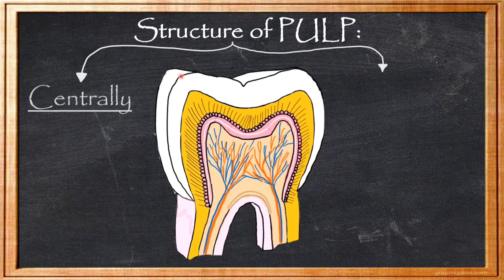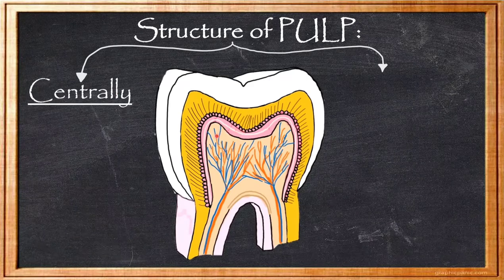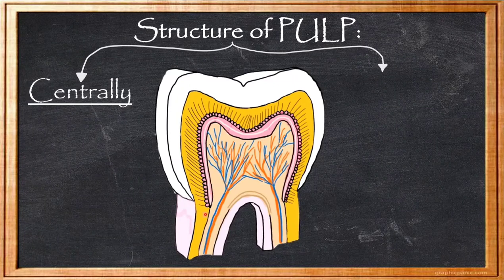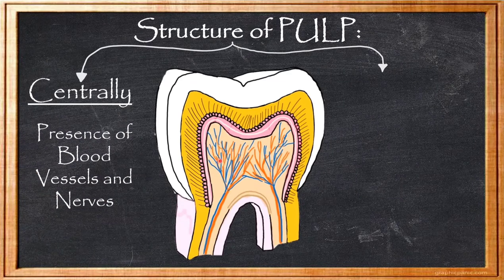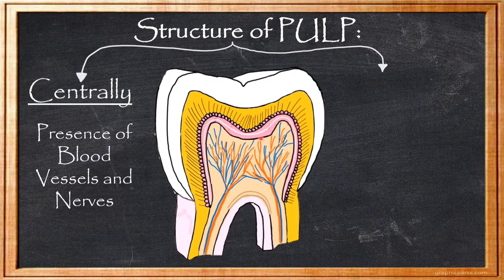The Structure of Pulp is divided into two major parts: the Centrally Located part and the Peripherally Located part. The central part contains blood vessels and nerves, which contribute greatly to the characteristic significant features present during Pulpal Inflammation.